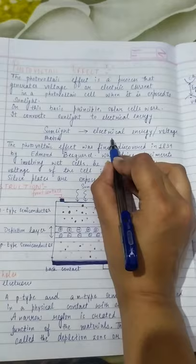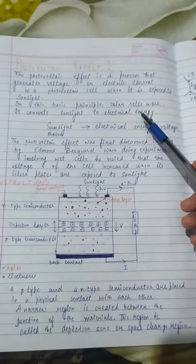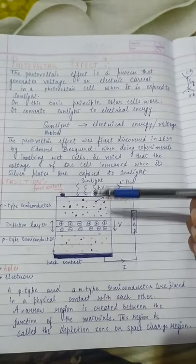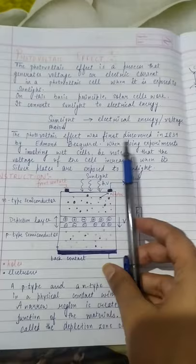On this basis, we have solar cells which work on the photovoltaic effect. We call these photovoltaic cells or solar cells, which work using solar energy. When you expose the device to sunlight, it will generate electric current in the circuit. This is the principle of solar cells.